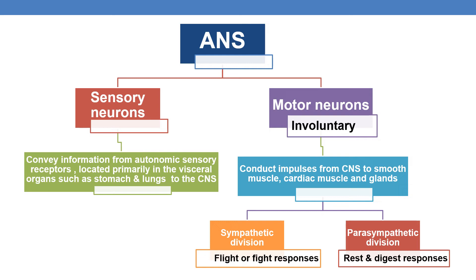Coming to the Autonomic Nervous System: the sensory neurons of the ANS convey information from autonomic sensory receptors located primarily in visceral organs such as the stomach and lungs to the CNS. When it comes to motor neurons of the ANS, the action is involuntary — they conduct impulses from the CNS to smooth muscle, cardiac muscle, and glands. The motor neuron part of the ANS is divided into two types: sympathetic division, which deals with fight-or-flight responses, and parasympathetic division, which deals with rest-or-digest responses.